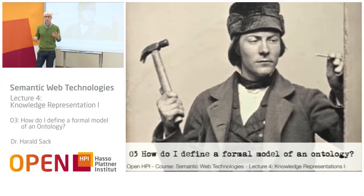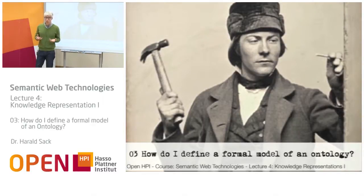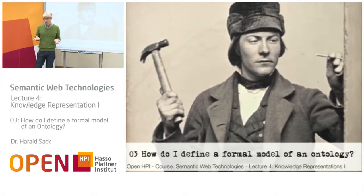A formal model means, as we learned in the last part, that I have to define the ontology in a way that it can be understood by a machine. And the easiest way to do this is to apply logic. So let's take a look at logic.